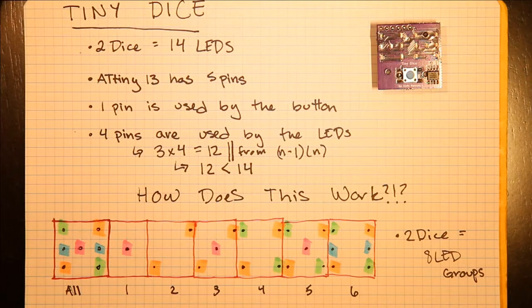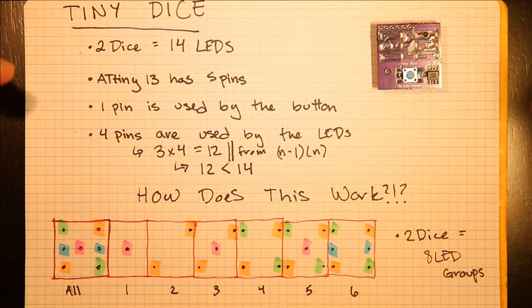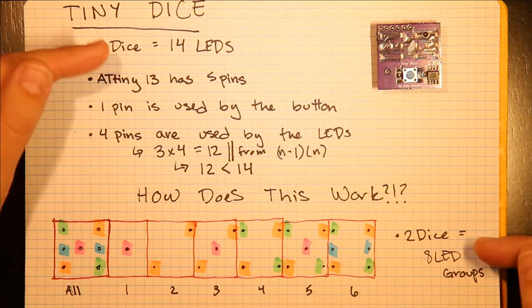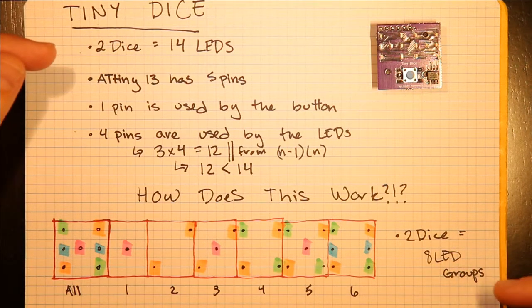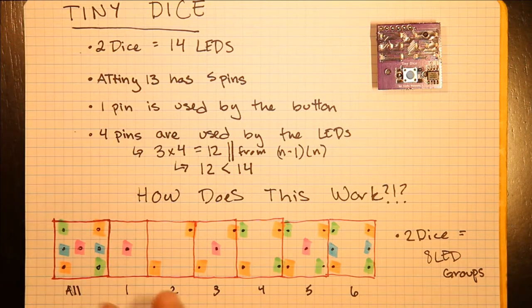So how can this work? The answer is two dice does mean 14 LEDs, but they're actually in eight distinct groups, and I've drawn out what those combinations are here.